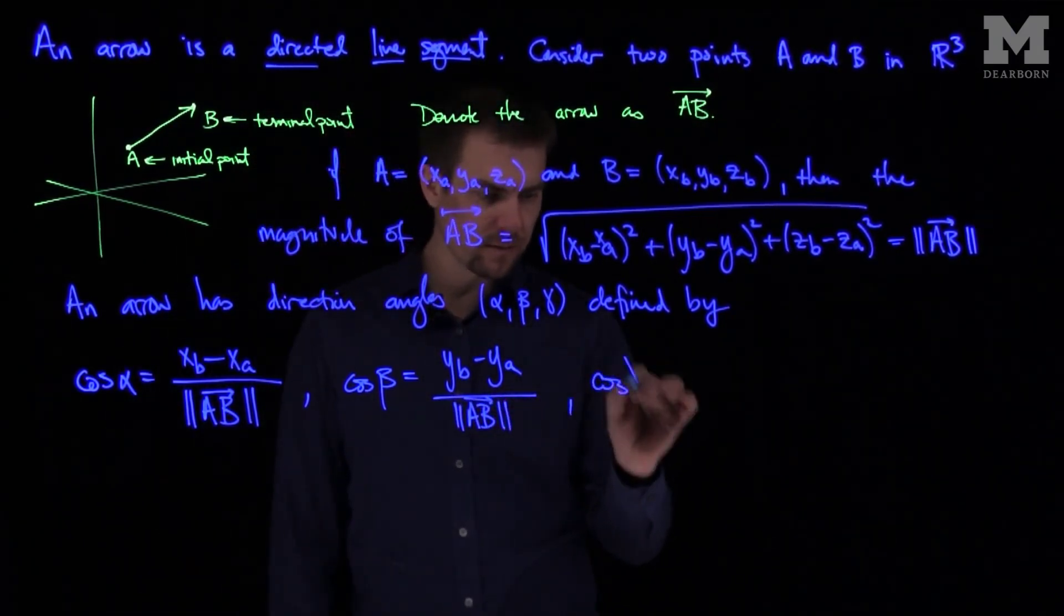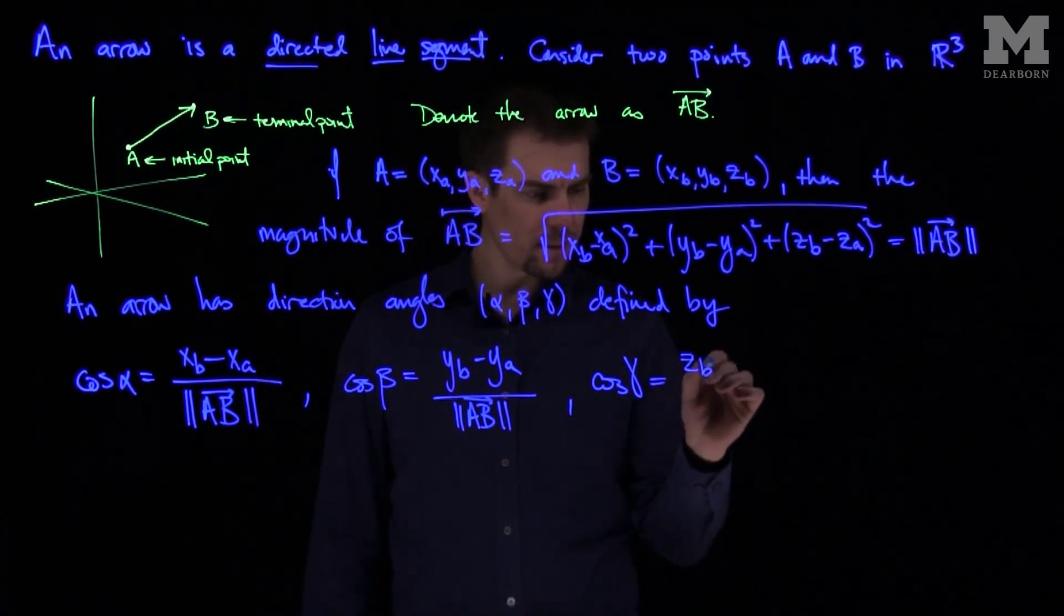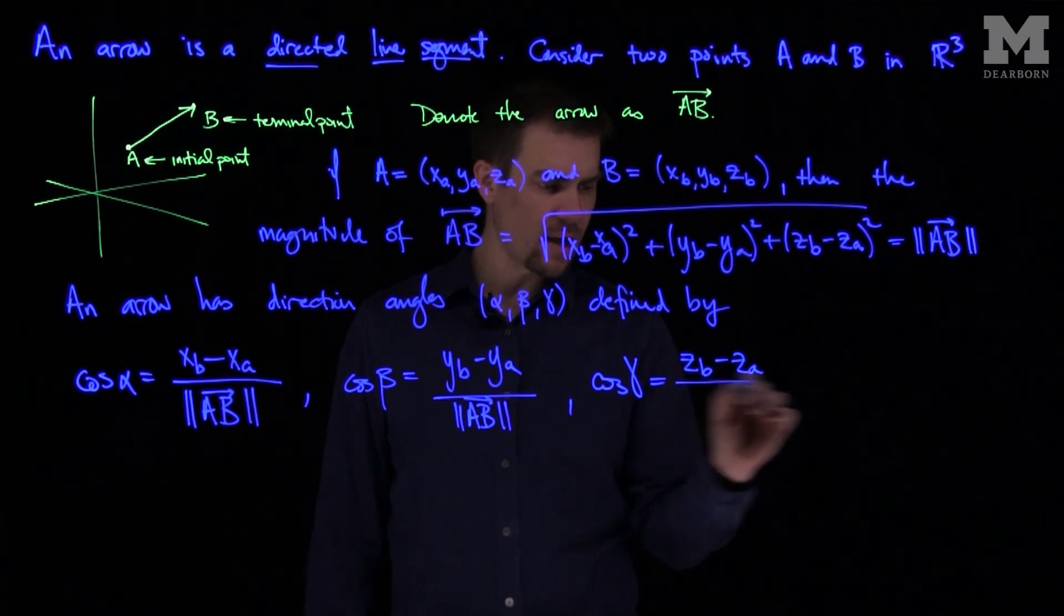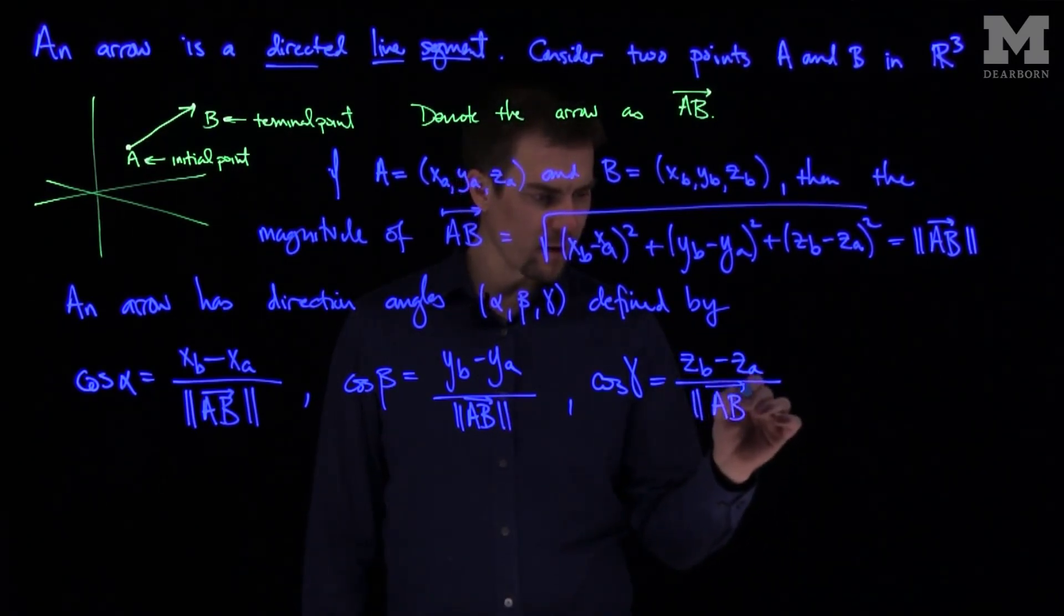And finally, the cosine of gamma is equal to (ZB minus ZA) over the length or the magnitude of the arrow AB.